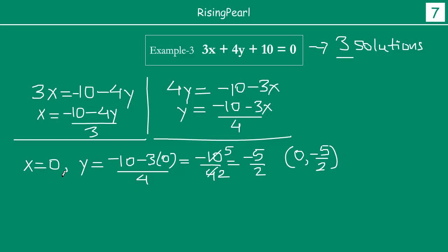Then we take x - you can take x as 1, 2, you can take any of these values for x. Now let us take x equal to 1. If you take x equal to 1, then y will be minus 10 minus 3 times 1 divided by 4. So we get minus 10 minus 3 by 4. Minus 10 minus 3 is minus 13 by 4. So we get x is 1, y is minus 13 by 4.